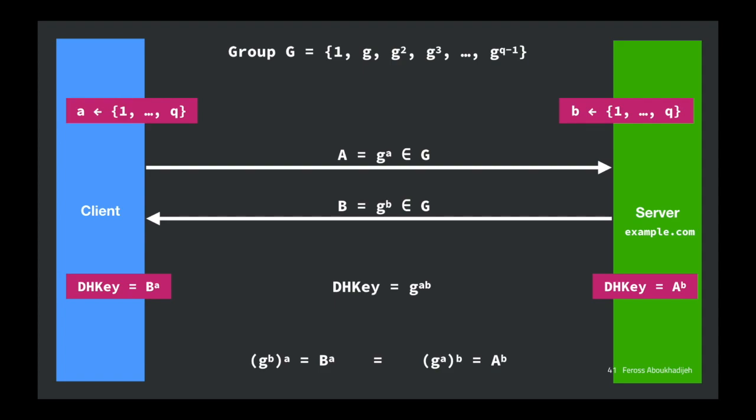Now we have a shared key we can use with an encryption algorithm to encrypt all future messages between the server and the client. This is called Diffie-Hellman. Both parties need to agree on the same key. Somebody in the middle observing only sees G-to-the-A and G-to-the-B. Even with G, there's no way to get G-to-the-AB from those values.